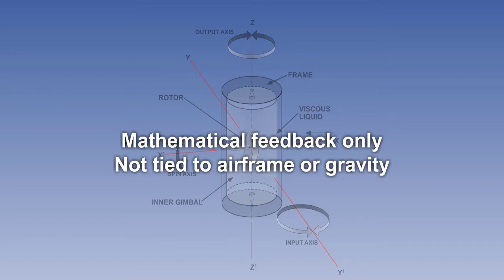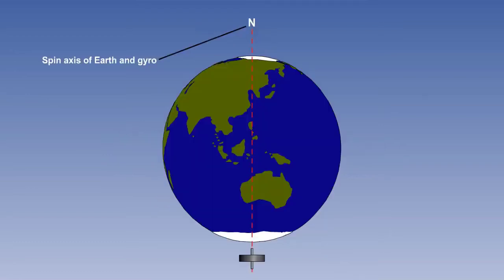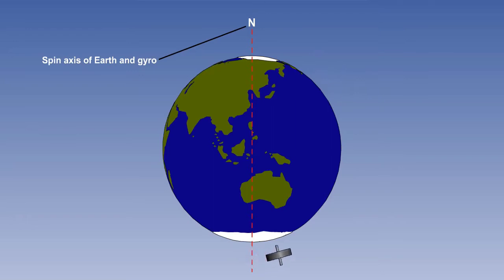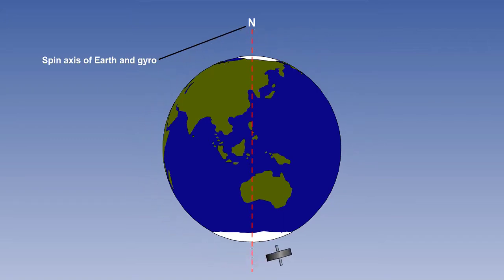However, mathematically computed corrections for apparent wander — that is, earth rate and transport wander — are applied. Space gyros remain orientated to a fixed point in space, but the whole purpose of INS gyros is to keep the platform level to local earth, but without using gravity as a sensor. This means that corrections for gyro wander need to be applied.